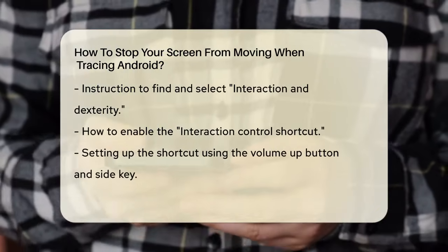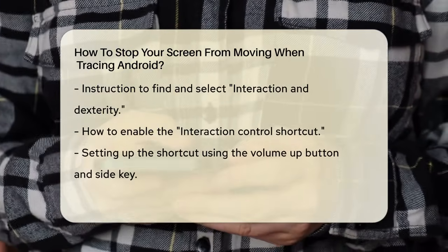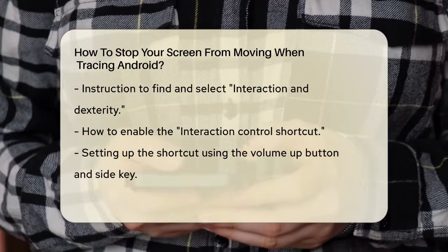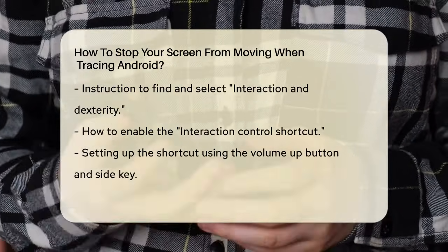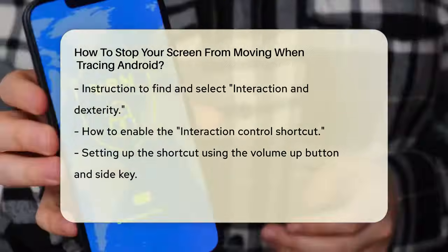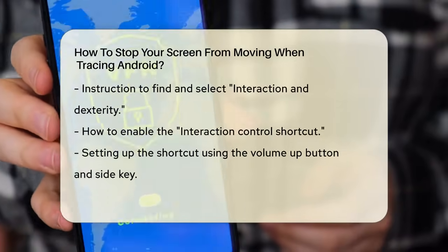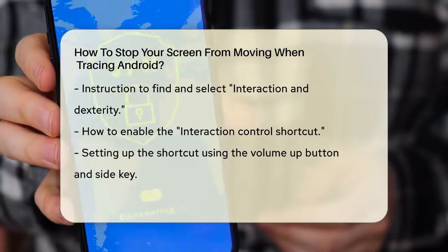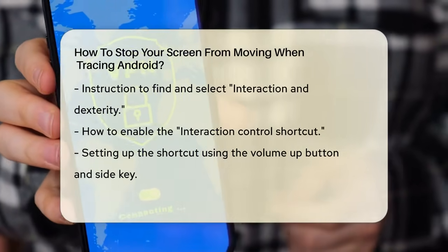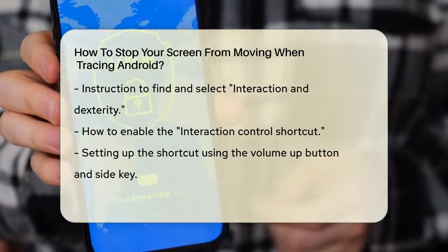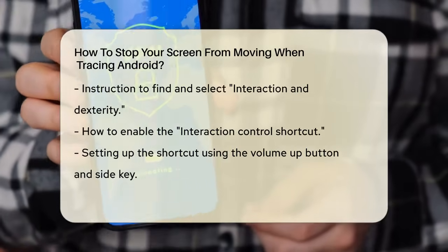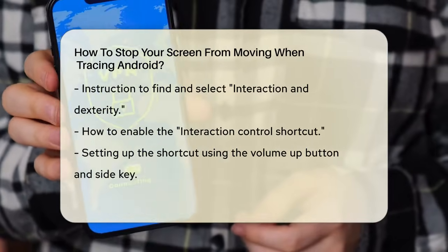Click on this and then select Interaction Control. Now you'll see an option for Interaction Control shortcut. Enable this by switching it on. You'll be asked to set up a shortcut, which typically involves pressing the Volume Up button and the Side key simultaneously.